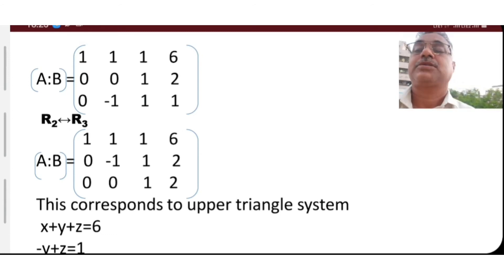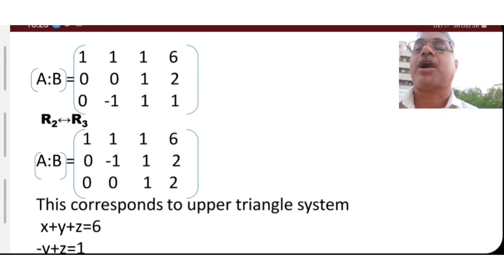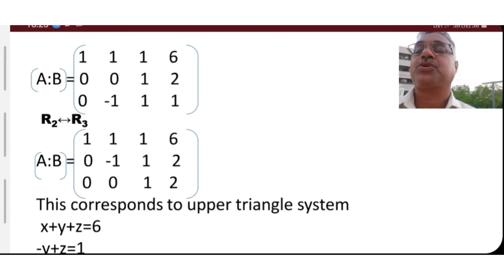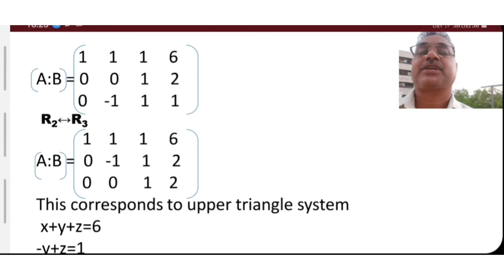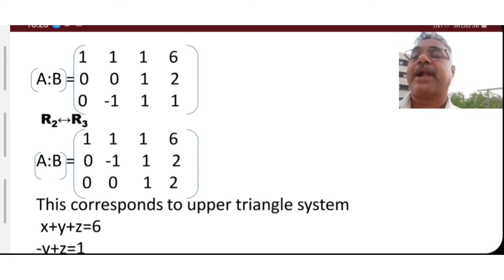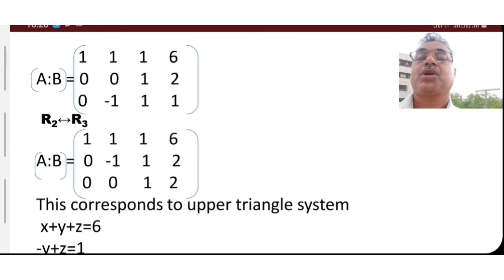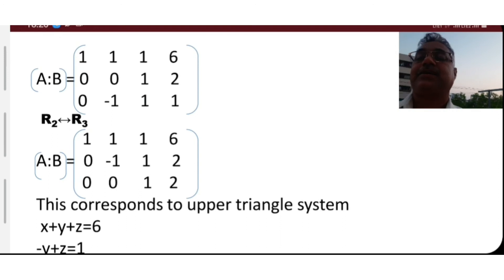The principal diagonal element at position (2,2) is zero, so we interchange R2 and R3. After interchanging, the matrix becomes: first row [1, 1, 1, 6], second row [0, -1, 1, 1], third row [0, 0, 1, 2]. Now the principal diagonal elements are non-zero.